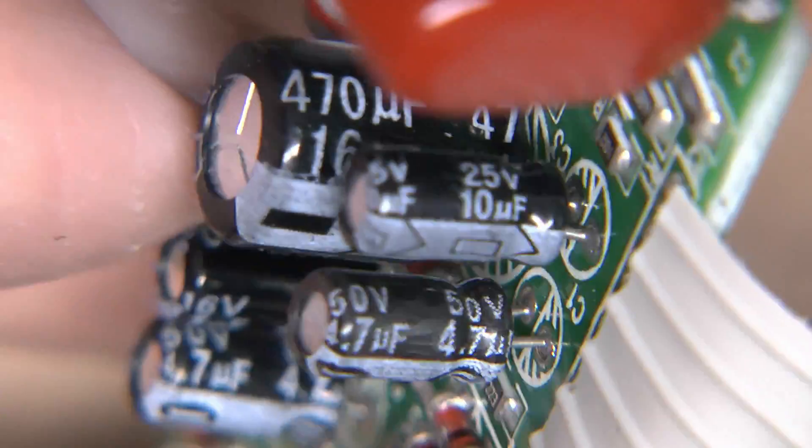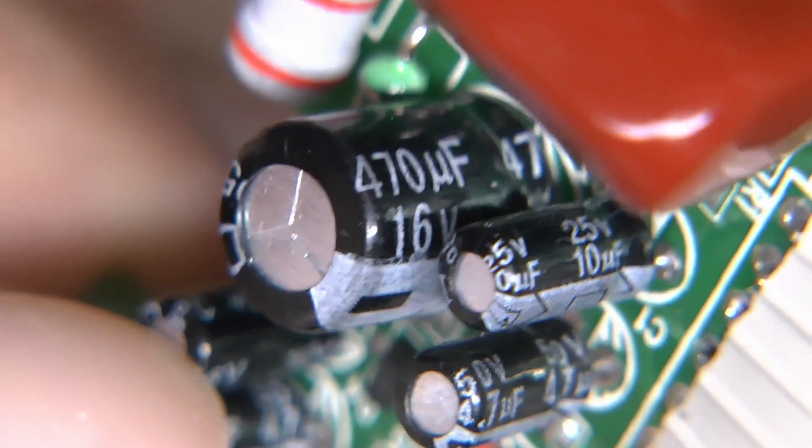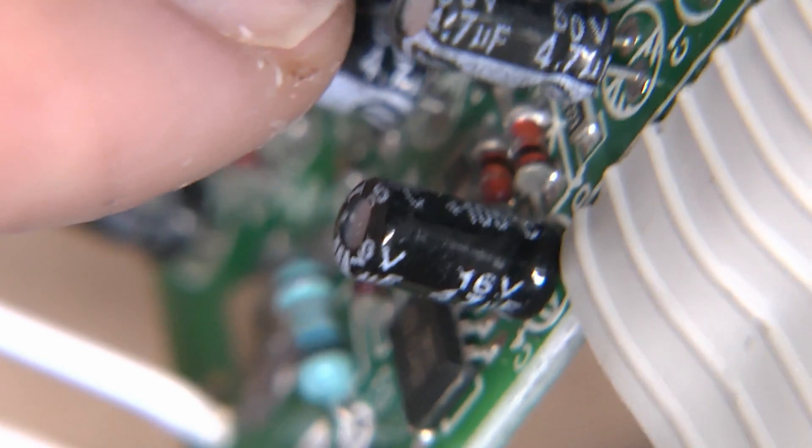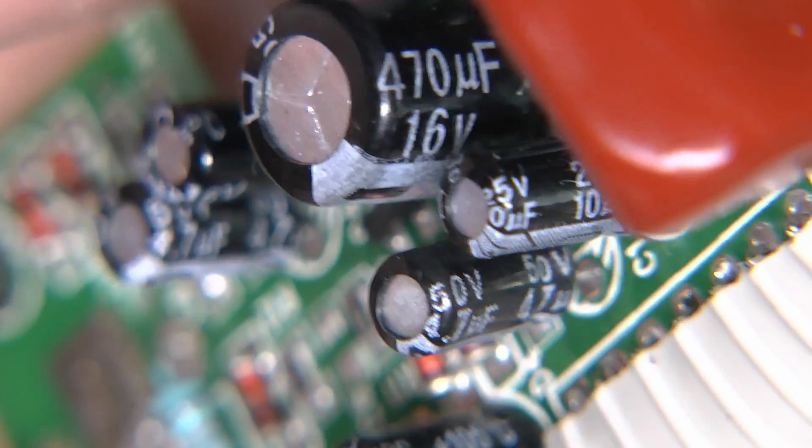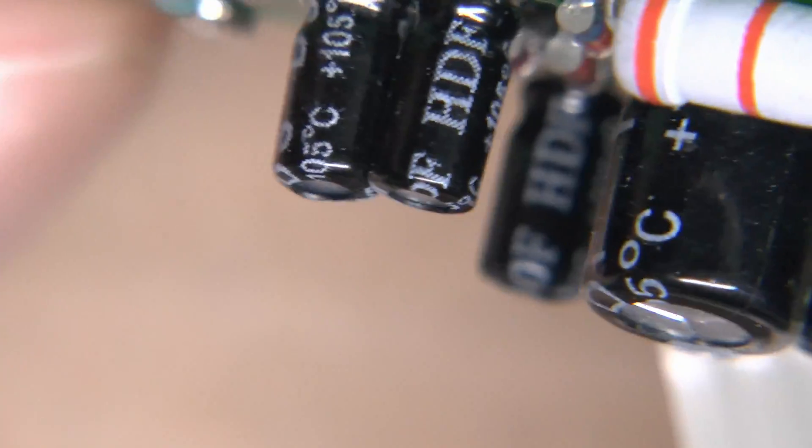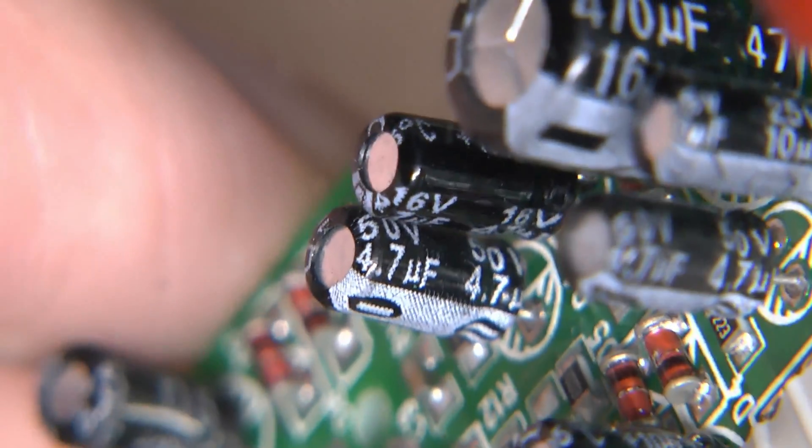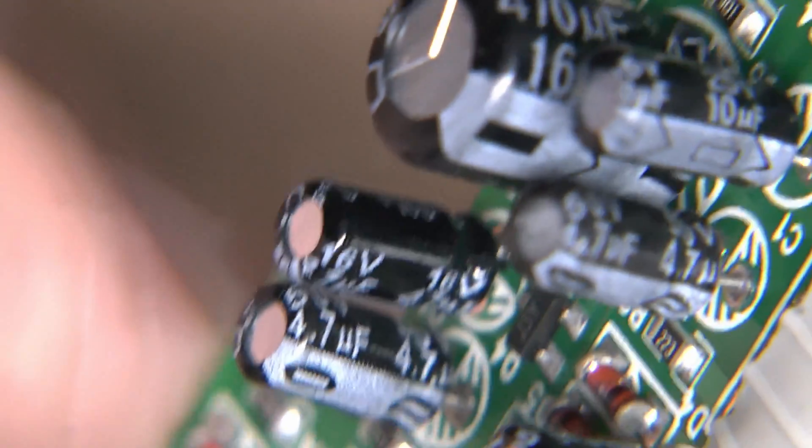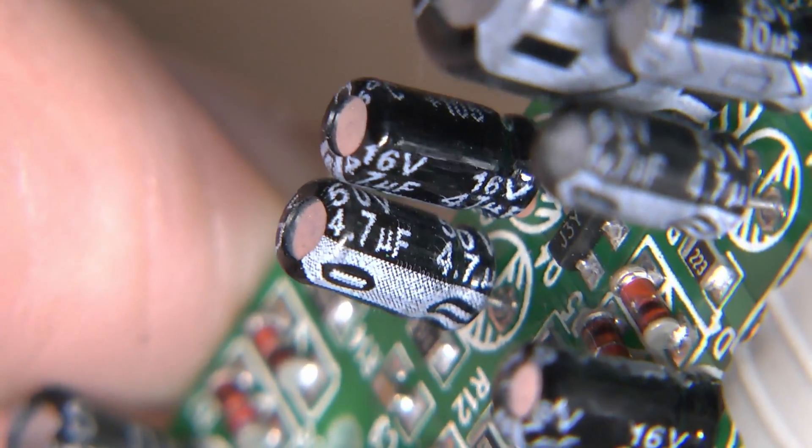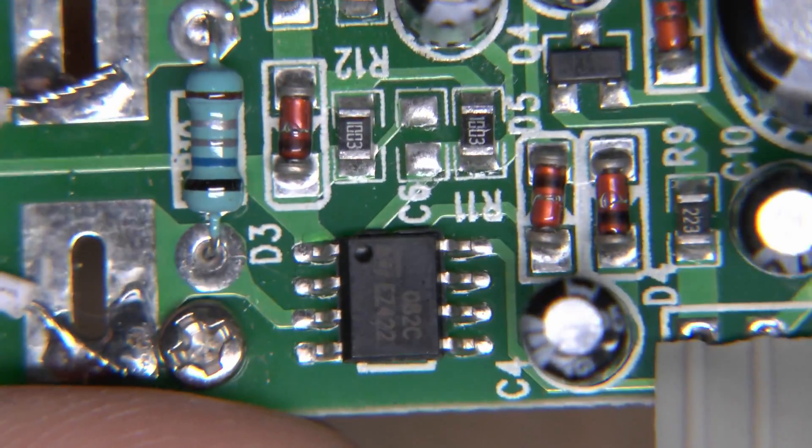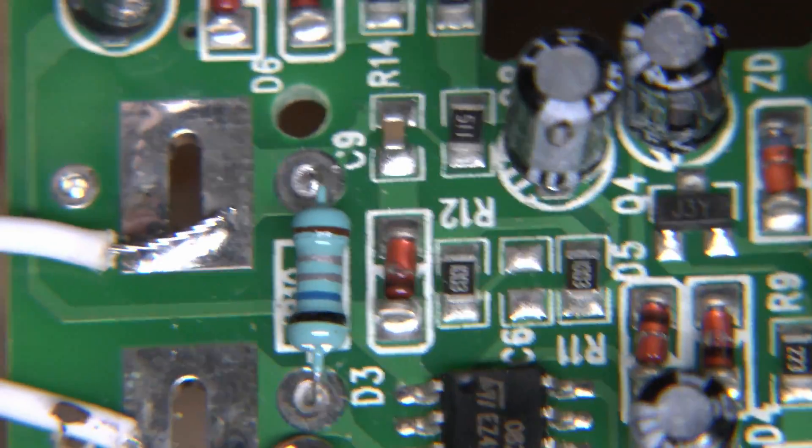These are capacitors. Let's just have a look here. 470 and that's 16 volts. We've got 10 at 25 volts. 4.7 at 50 volts. That's 16 volts there. It claims to be 105 degree rated. Same on that one. Then a couple over here, which also claims to be 105s. Again, they're just 16 volts. And the one next to it is 50. So somewhat inconsistent with the voltage ratings there. But, bearing in mind, all this is going to be running at very low voltages anyway. So it might not be a problem.